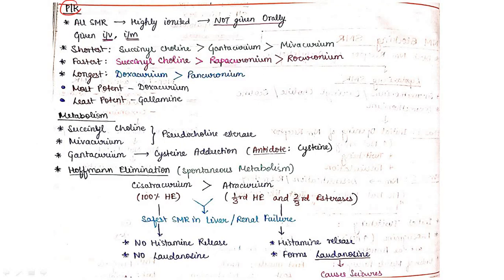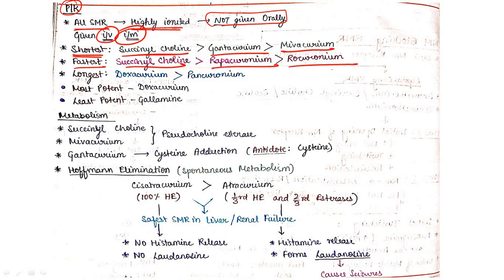Regarding pharmacokinetics: all SMR are highly ionized, so they should not be given orally — only IV or IM. Shortest acting: succinylcholine, followed by gentacurium, then mivacurium. Fastest onset: succinylcholine, followed by rapacurium, then rocuronium. Longest acting: doxacurium, followed by pancuronium.